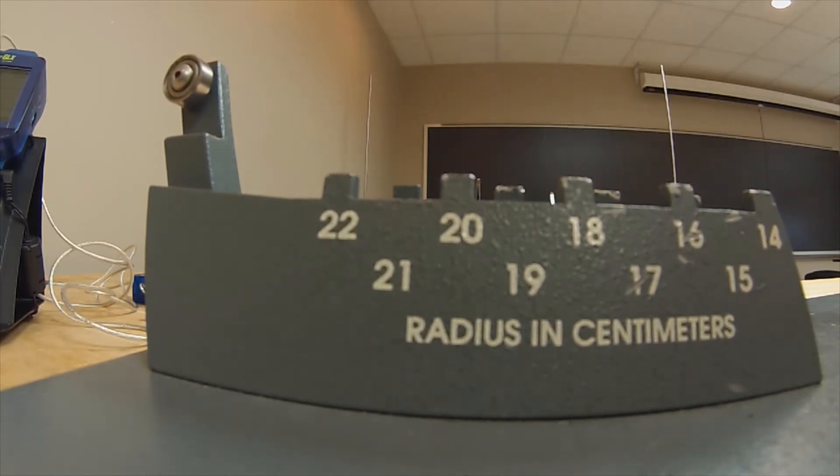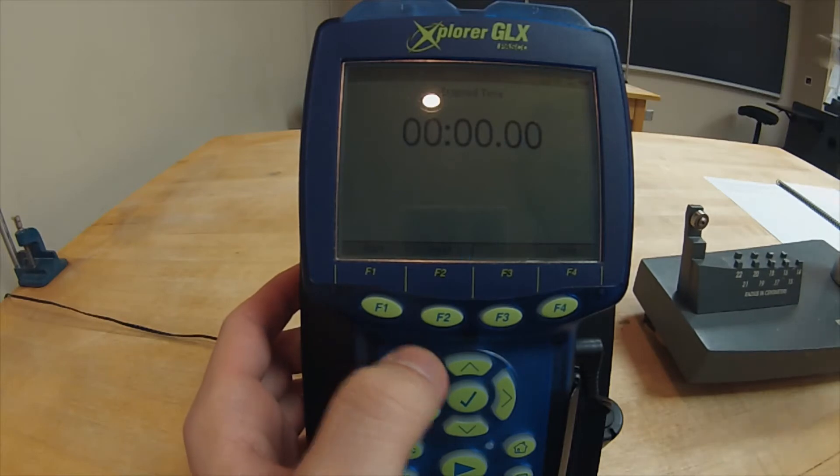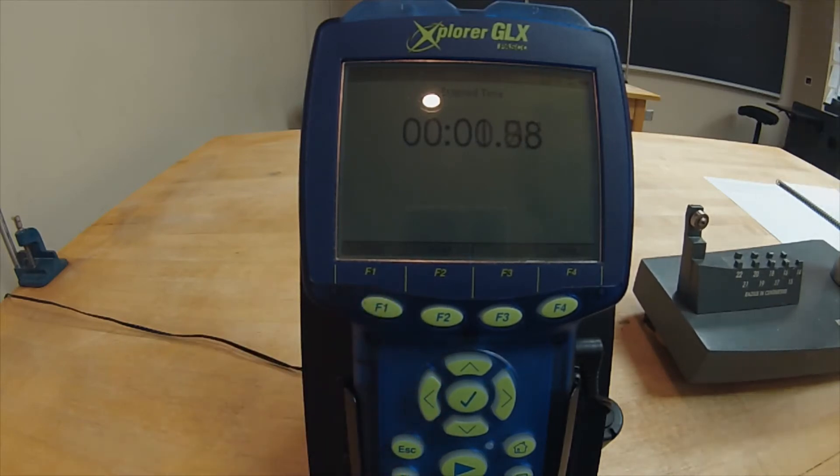Once you have developed a rhythm for turning the centripetal force apparatus that consistently results in the bob passing over the correct mark on the radial measuring scale, you are ready to start timing the revolutions.